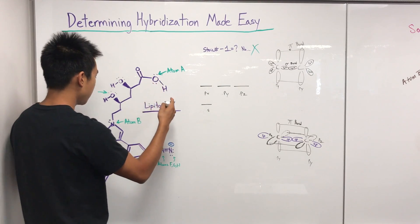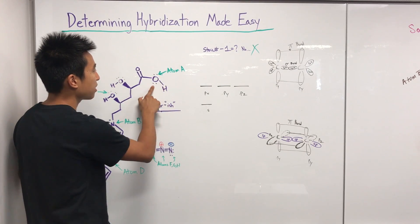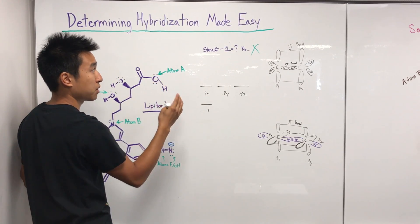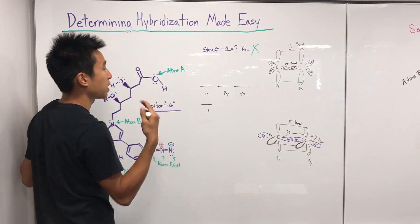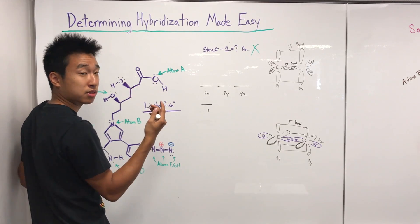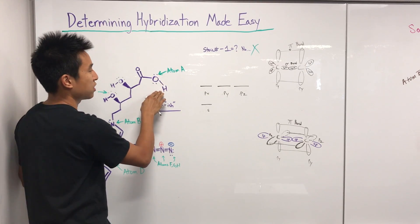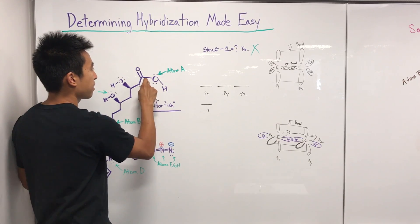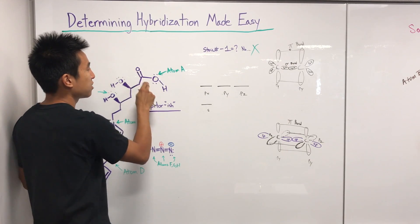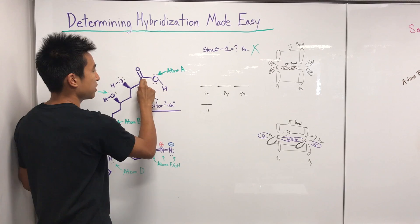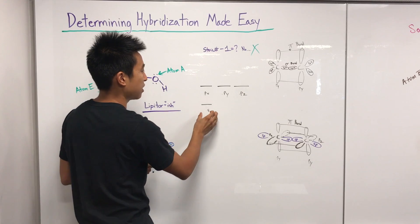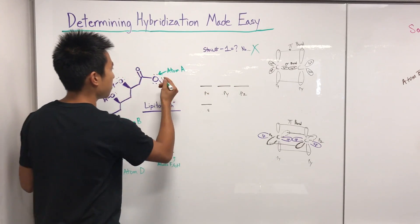Now let's apply that to atom A. What's the maximum number of pi bonds it can make? If you do steric number minus one, you'd get 4 minus 1 = 3, giving sp3 — but you have to look out for resonance. Can this oxygen resonate and create more pi bonds? It can't go toward hydrogen (hydrogen can only make one bond), but it can resonate to form a double bond with the adjacent carbon, creating a pi bond there. That knocks out the py orbital, leaving s and two p's, so atom A is sp2.